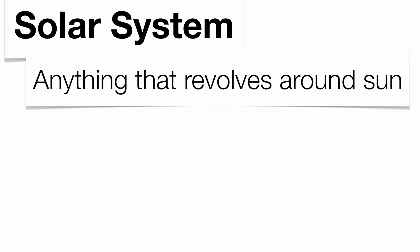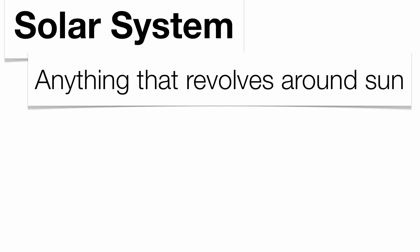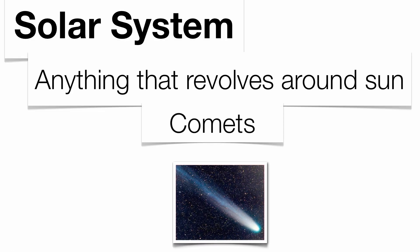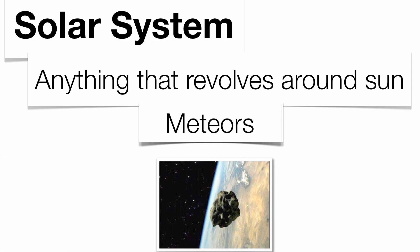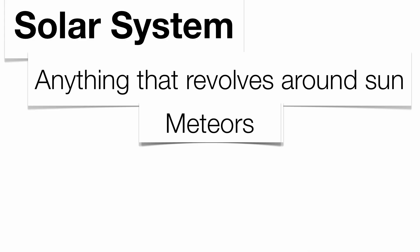Now anything in our solar system that's going to move around the Sun is going to be part of our solar system, which includes comets, which are icy objects formed at the very outskirts of the solar system, meteors, which are chunks of rock, and meteors up in space are called meteoroids.